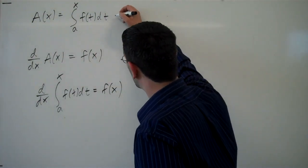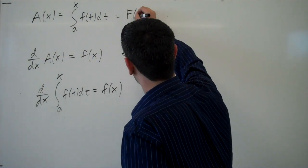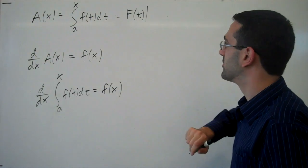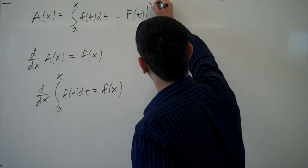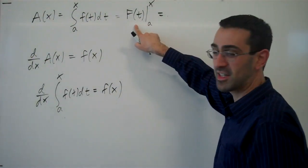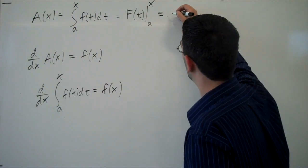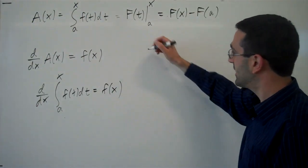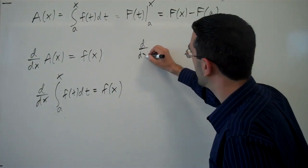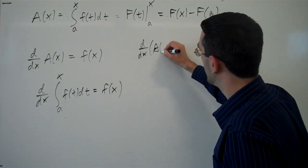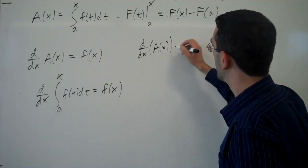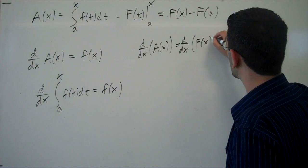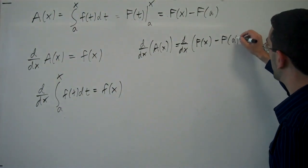So we can find some function, big F, that is the antiderivative of little f, and so this would be the antiderivative evaluated from a to x, so big F(x) minus big F(a). In that case, then the derivative of A(x) would be the derivative of big F(x) minus big F(a).